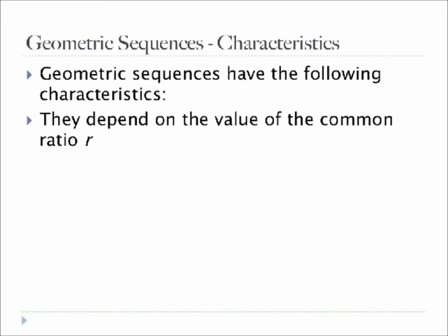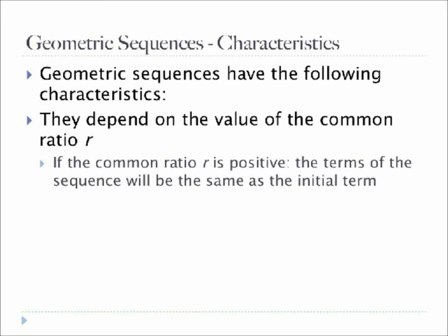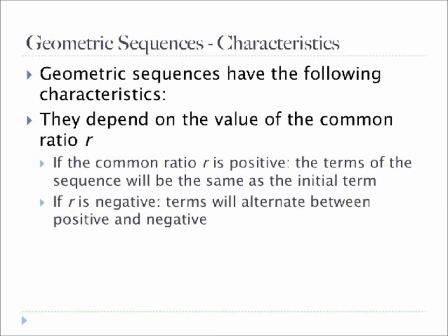Geometric sequences have the following characteristics. They depend on the value of the common ratio r, and following that, if the common ratio r is positive, the terms of the sequence will be the same sign as the initial term. If r is negative, the terms will alternate between positive and negative.